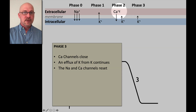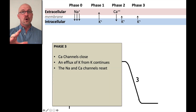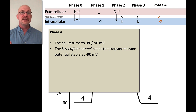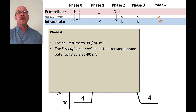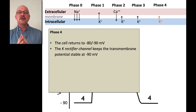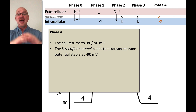In phase three, the calcium channels that were pushing calcium in start to close, but potassium is still going out, so we start to drop down. As we drop down, the sodium and calcium channels can reset and are ready to open again in the next phase. In phase four, the resting phase, things are dynamic — not static. The cells want to maintain around minus 90 millivolts. Potassium rectifier channels rectify the resting membrane potential and keep it at around minus 90.